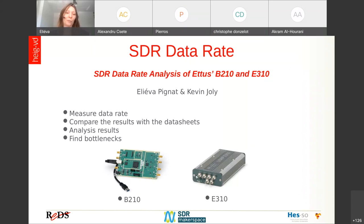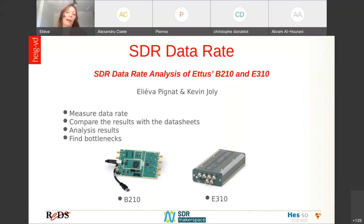To measure the data rate, we developed a small application using the UHD library. The application is used to send data to the board, and then the board sends it further via radio, and also to configure some parameters of the board such as the frequency. What interested us most was the data rate. To find the maximal data rate, we started with a very high data rate and then slowly decreased it until we had no more loss of data during five minutes.